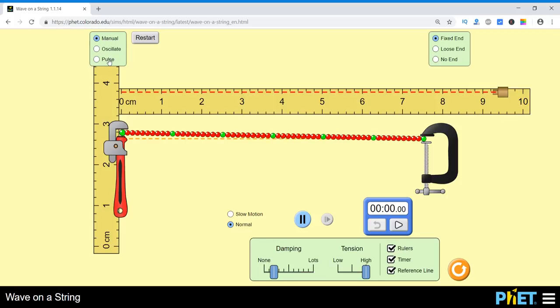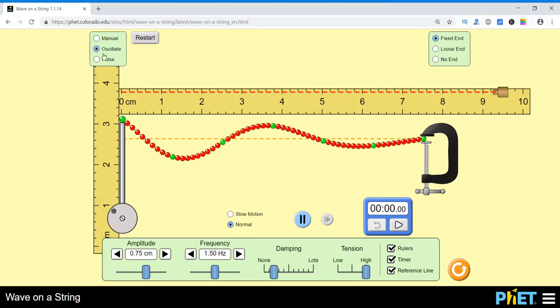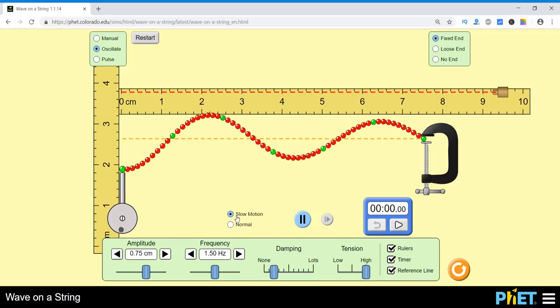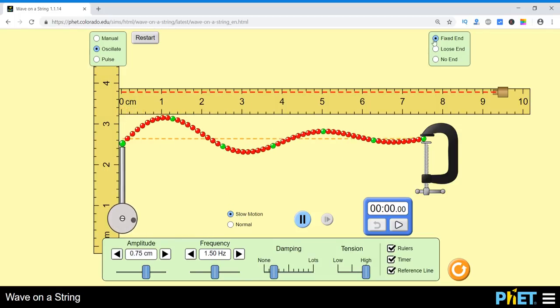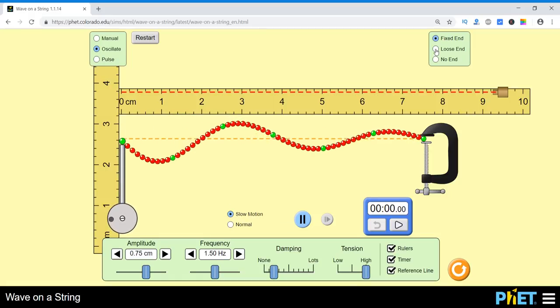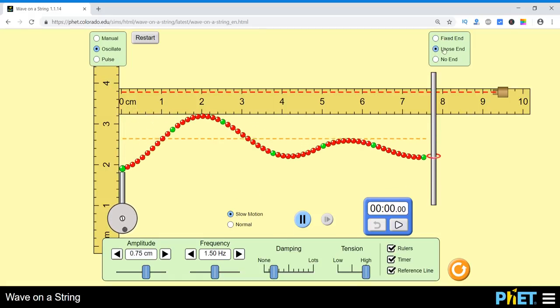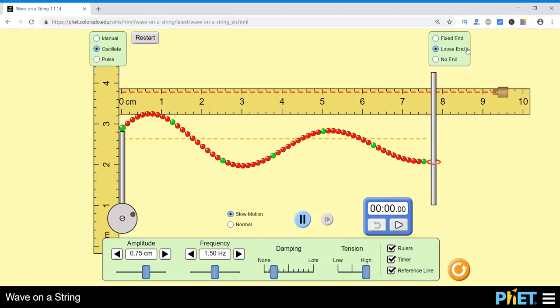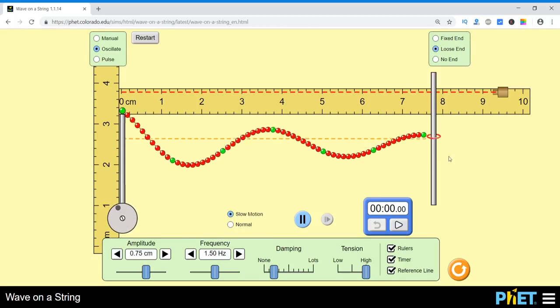Let's see this. We have seen manual oscillations and pulses, but the other end was fixed. You see here that this end is fixed. Now I will change it to loose end. Now here I have selected the oscillate and slow motion is good for you. It will be better to understand it. So it is fixed end. Now I am leaving it free and it is now loose end. It is a loose end. So see the motion.